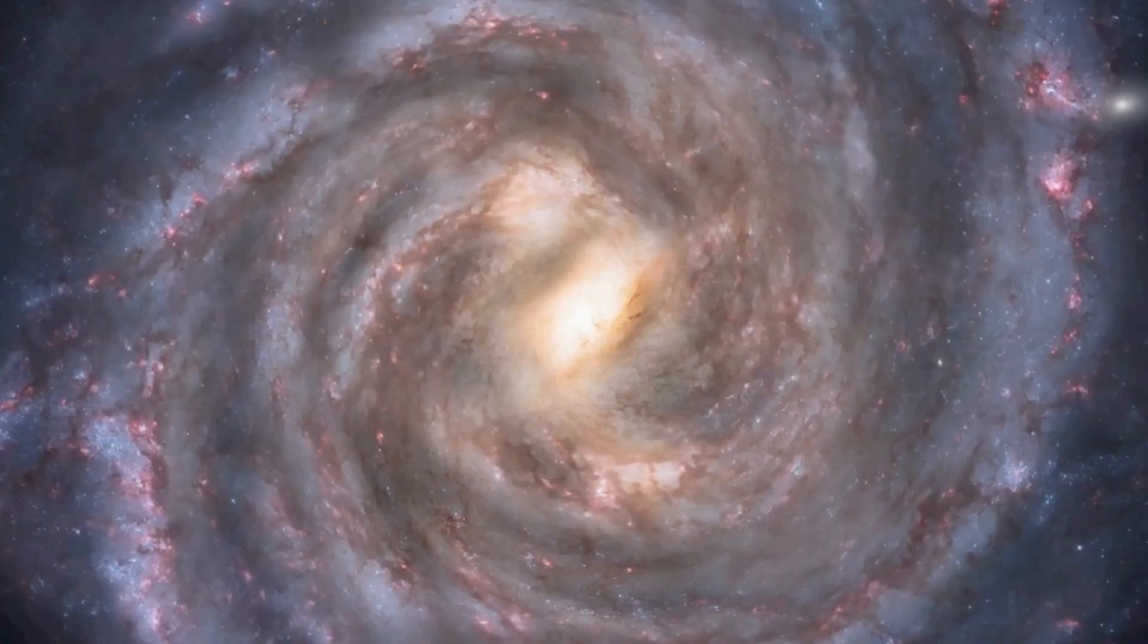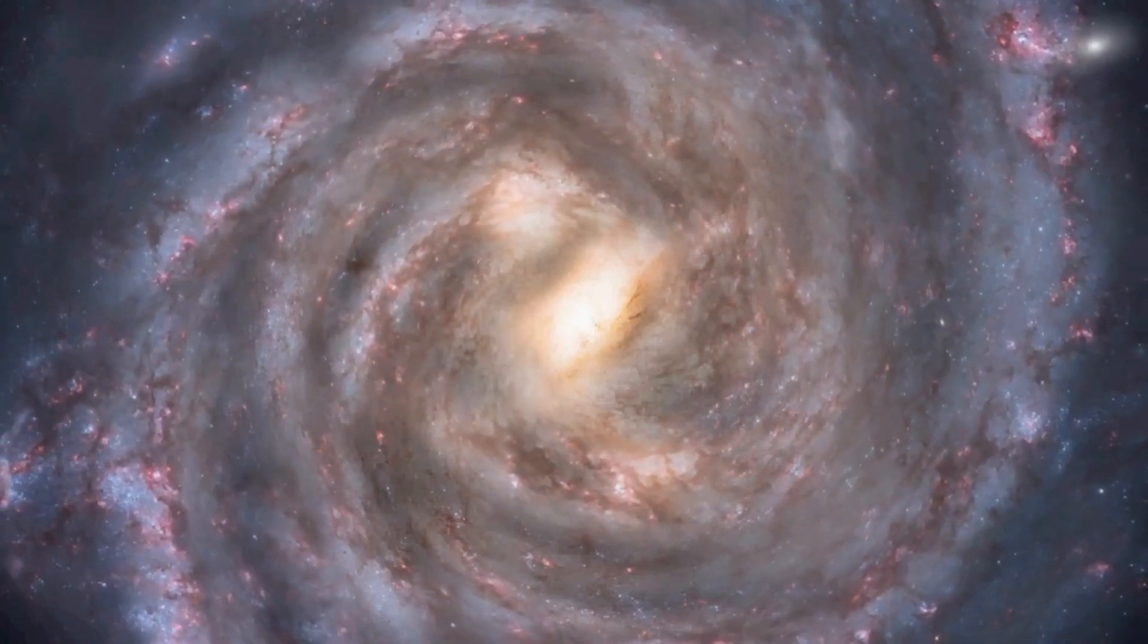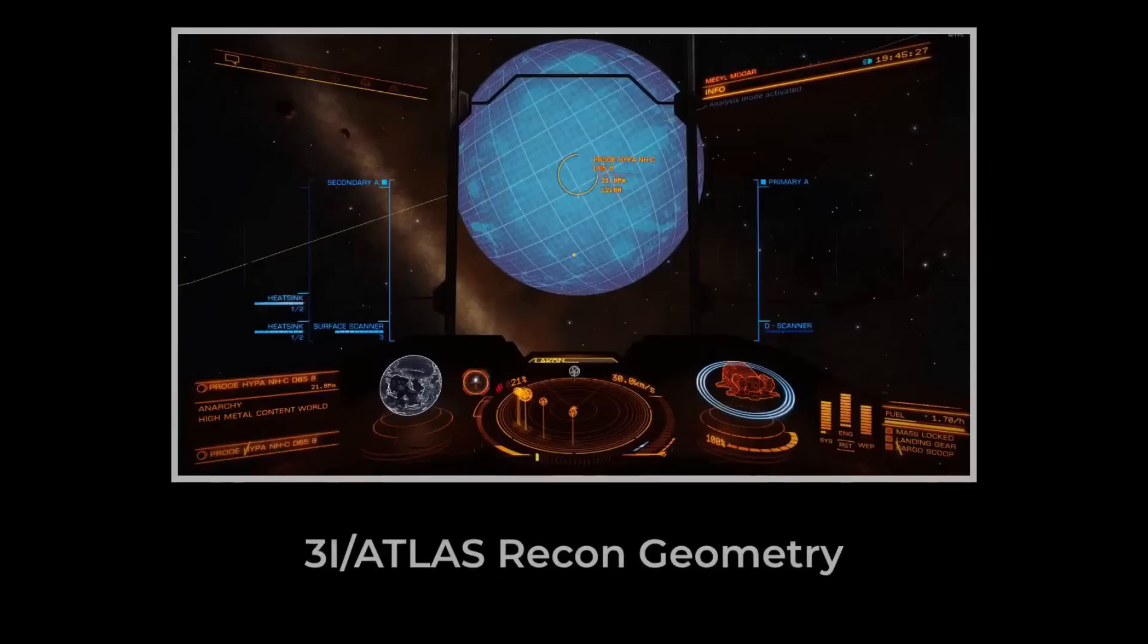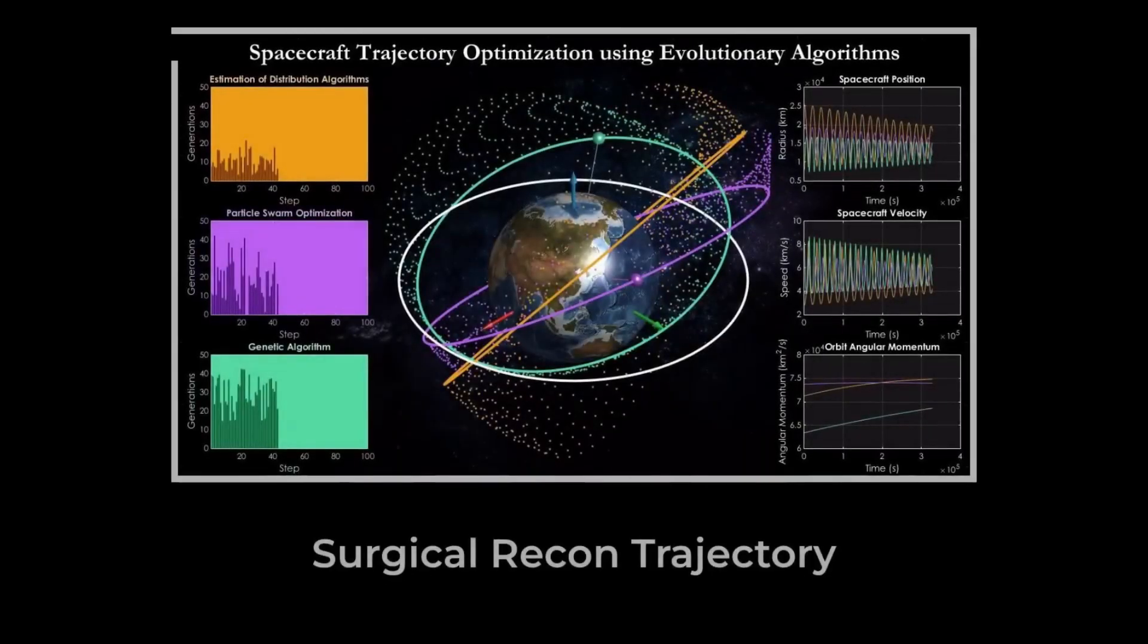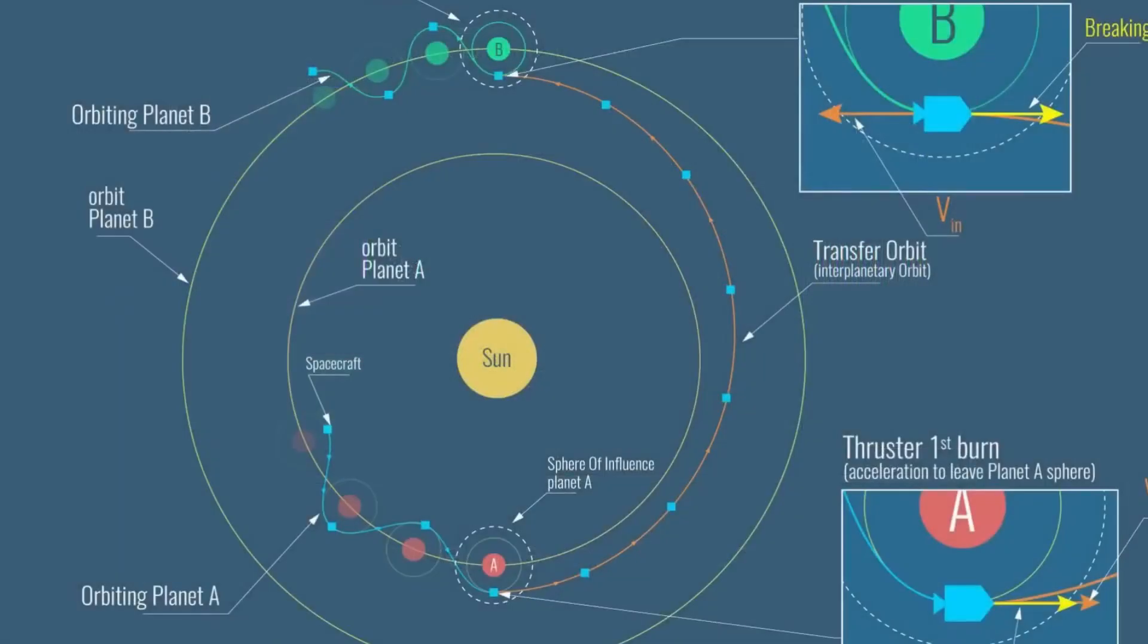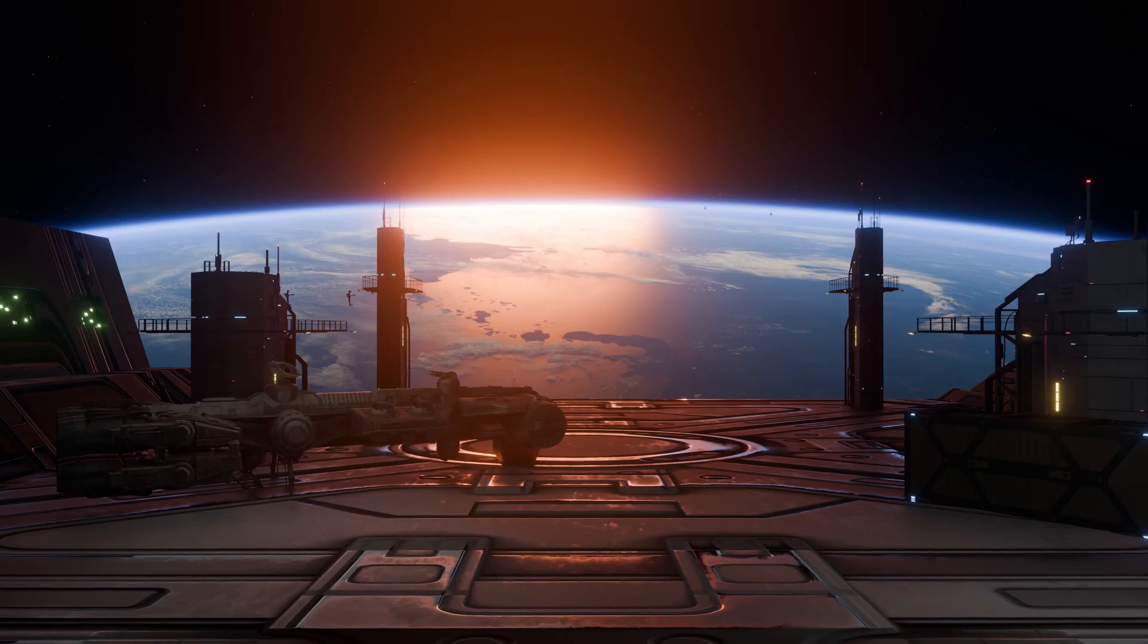Loeb invokes the cold logic of reconnaissance: a probe sent to survey a system would optimize its path for maximum coverage with minimum risk. The odds of this happening by chance, he claims, are less than one in twenty thousand. If the path is engineered, it reflects a level of planning that rivals our own most ambitious planetary missions.